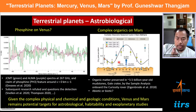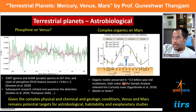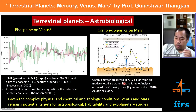Given the complex physical, chemical, and geological conditions, Venus and Mars among the terrestrial planets remain very potential targets for astrobiology or exobiology studies.